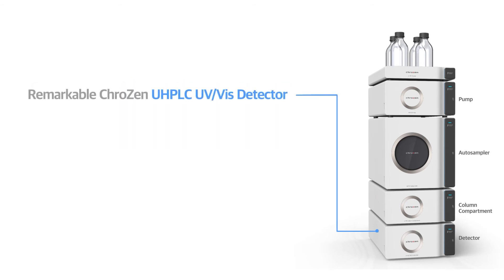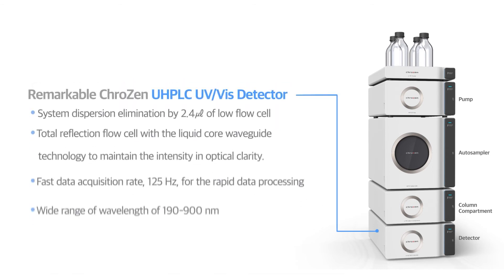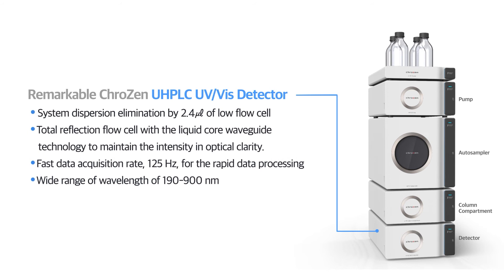Remarkable Crozen UHPLC UV visible detector. The system dispersion is eliminated by using 2.4 microliter of flow cell for high sensitivity while maintaining the intensity in optical clarity. Fast data acquisition and wide range of wavelength detection is available.